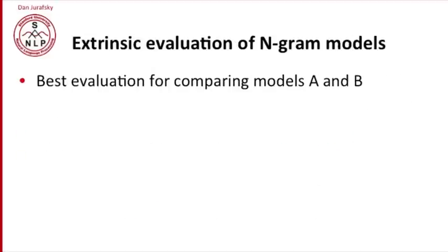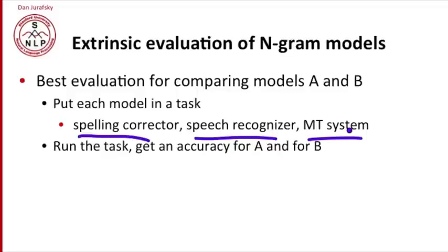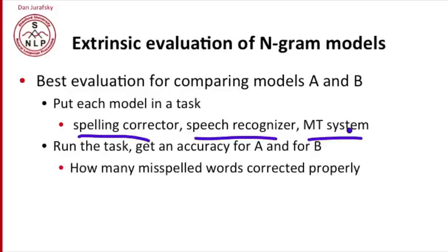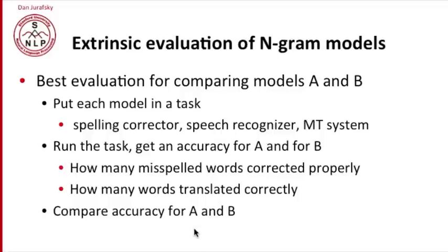So what are these evaluation methods? The best way of comparing two language models A and B is to put each model in a task — build a spelling corrector, speech recognizer, or MT system, whatever application uses language models. We run the task and get some accuracy for the system running with model A and with model B. Perhaps that's how many misspelled words are corrected properly, or how many words are translated correctly. Whichever model has higher accuracy is the better language model.